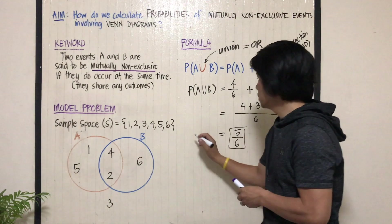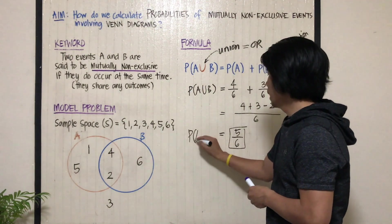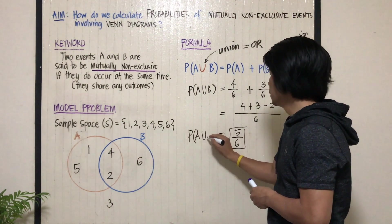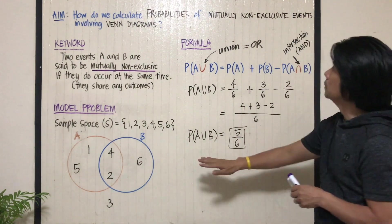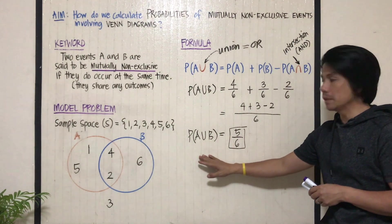That's how you find the probability of A union B or the probability of mutually non-exclusive events.